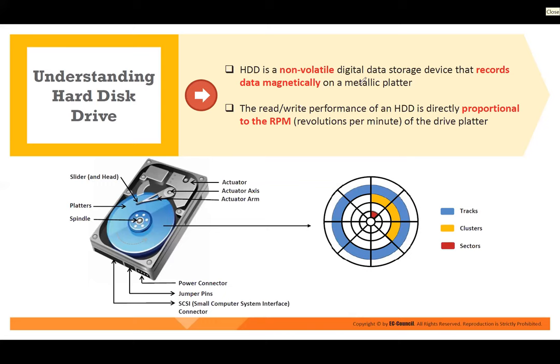You have something called tracks — the entire circular ring is called a track. We have track one, track two, track three. Then we have something called a cluster, which is a cluster of data. The smallest unit we call a sector. So we have sector, then multiple sectors form a cluster, and many clusters form a track.